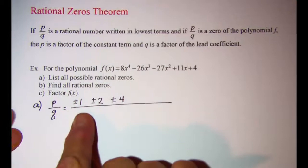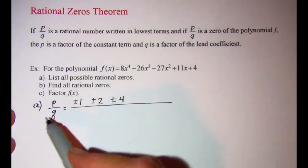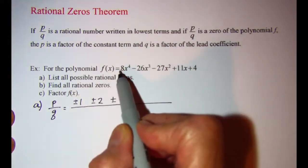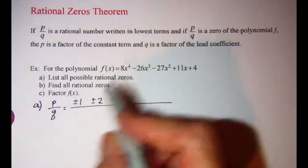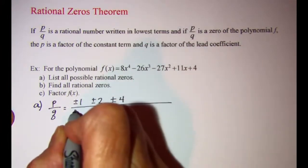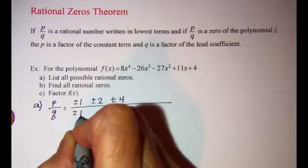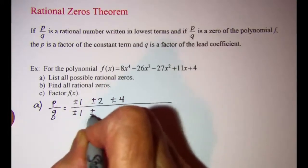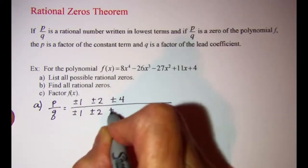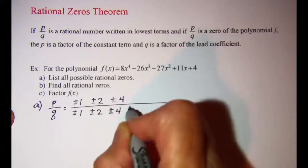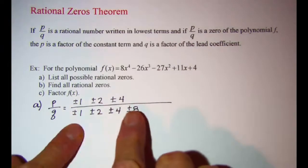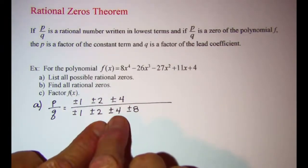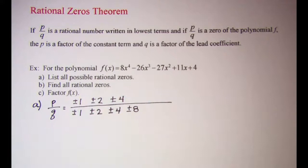For my denominator, Q is going to be factors of my lead coefficient. I want to list my factors of 8. Factors of 8 are plus or minus 1, plus or minus 2, plus or minus 4, and plus or minus 8. Again, 1 times 8 is 8 and 2 times 4 is 8, so that should be all of them.